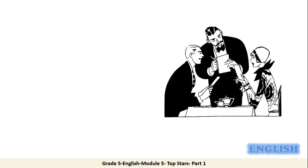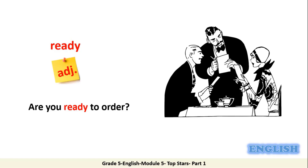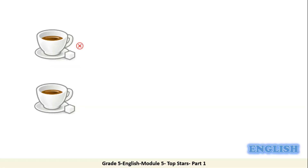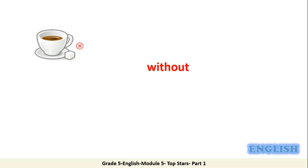Look at these people. Where are they? They are in a restaurant. They want to have dinner and they are ready to order. Are you ready to order? Which part of speech is the word ready? It is an adjective. Here we have two cups of coffee. One of them is with sugar and the other one is without sugar. I drink coffee without sugar. Which part of speech is the word without? It is a preposition.